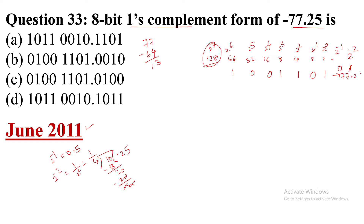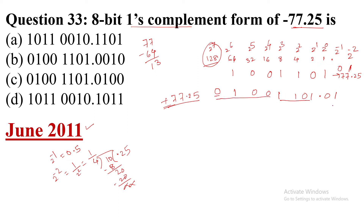So the representation of +77.25 — with the sign bit, we take one extra bit. The sign bit for a positive number is zero. Then the integer part is 1001101 and the fractional part is .01, giving us 0 1001101.01. This is the 12-bit representation: 4 bits integer, sign bit, and 2 decimal bits after the point.